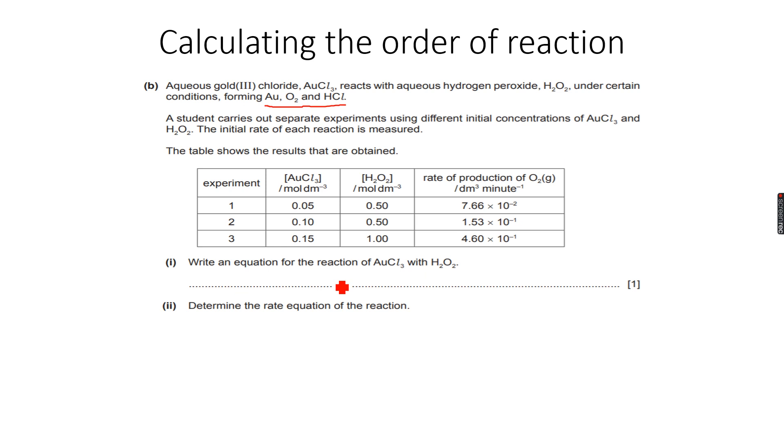The first part is, write an equation for the reaction of AuCl3 with H2O2. When I make this equation and balance it, I get 2AuCl3 plus 3H2O2 gives 2Au plus 3O2 plus 6HCl.